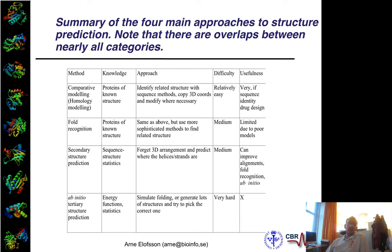Then there was a category called fold recognition. The idea was that you could find templates not just using sequence but also using structural information, basically finding more distantly related sequence structures. That has more and more been taken over by using sequence information instead, because the sequence database is so much bigger and the methods are much better. You can use different combined methods there, and it has become quite useful.